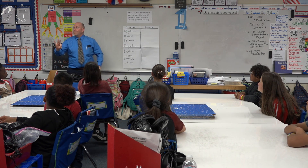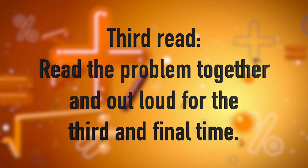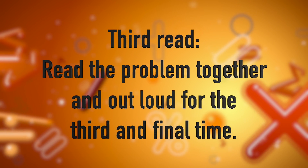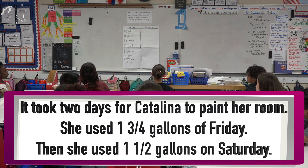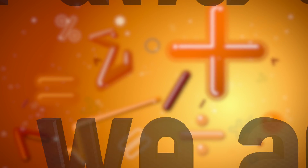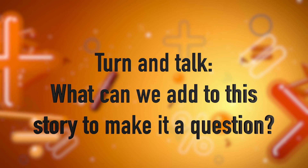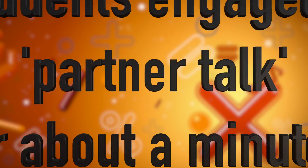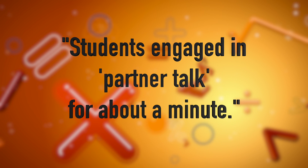We're going to read this question a third and final time. We're going to read it in unison again — you guys did a pretty good job reading it together last time, let's do it even better. It took two days for Catalina to paint her room. She used one and three-fourths gallons on Friday. Then she used one and a half gallons on Saturday. Ladies and gentlemen, with your same partners — you'll notice this story has no question, there's no question mark, so we don't know what we're supposed to solve. Come up with a question that involves a question mark. Go.